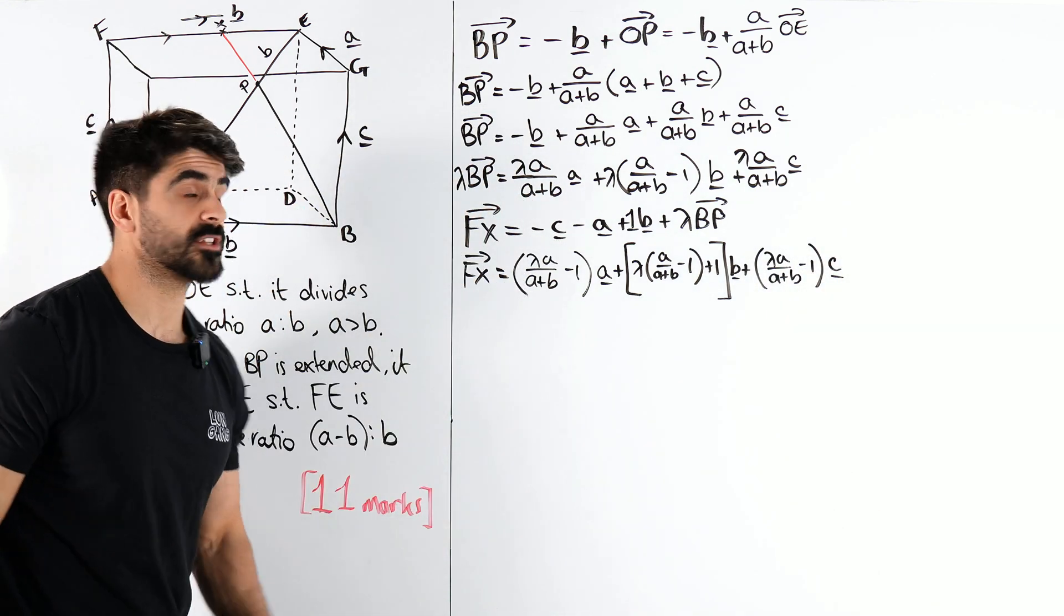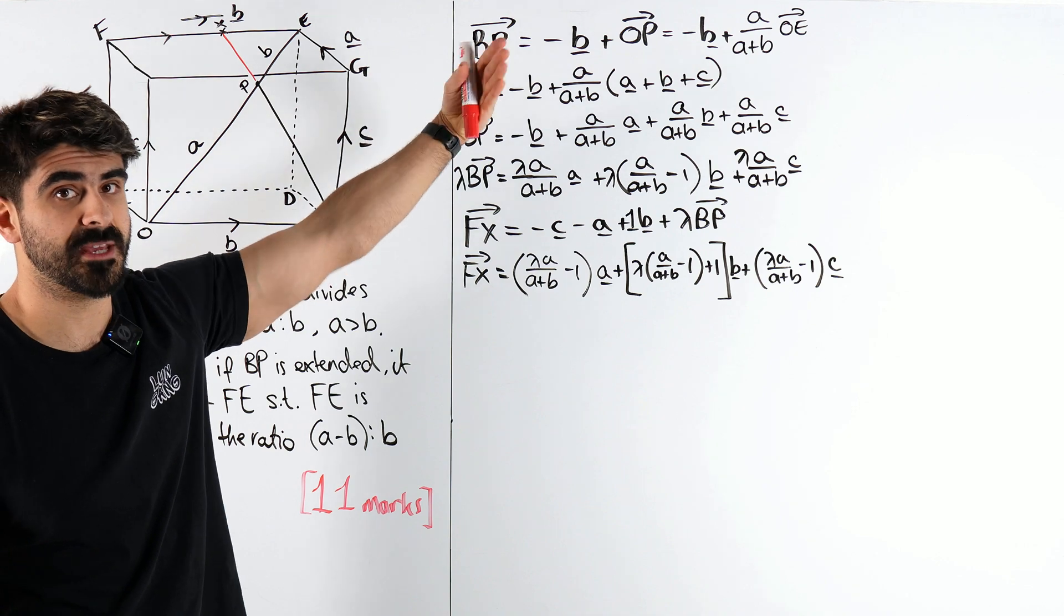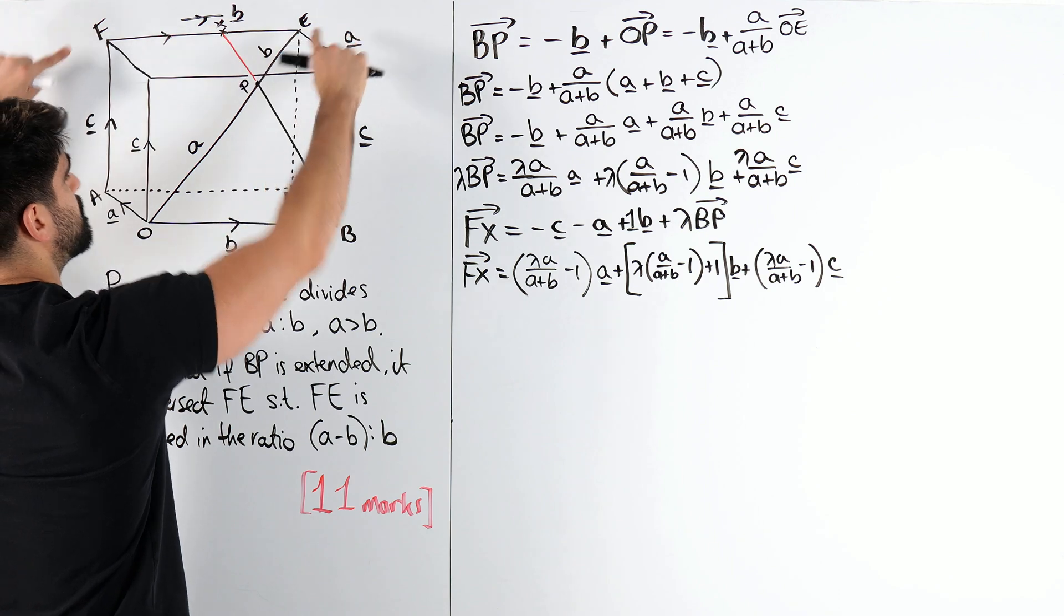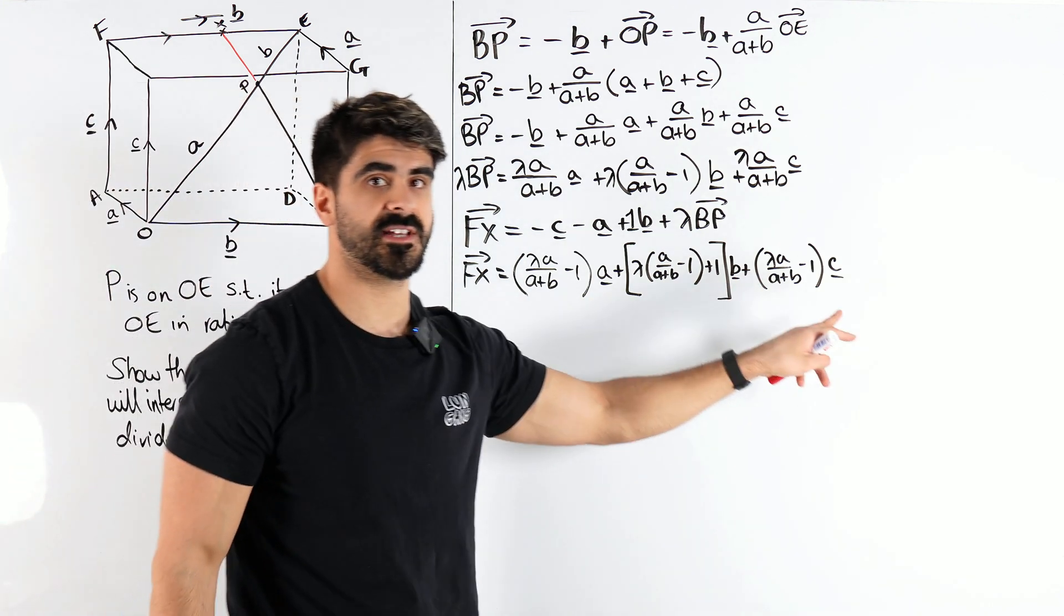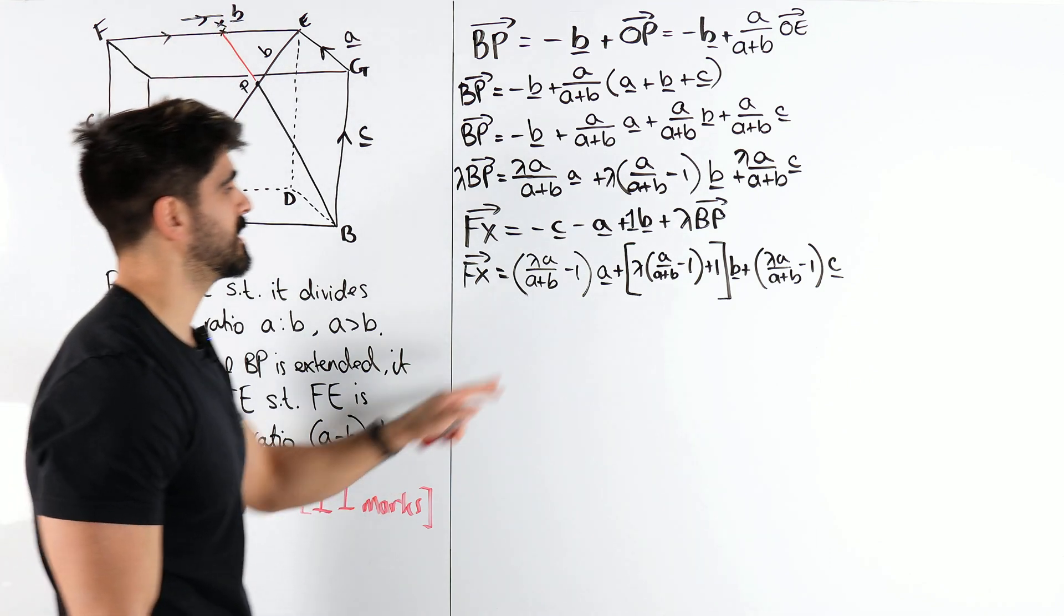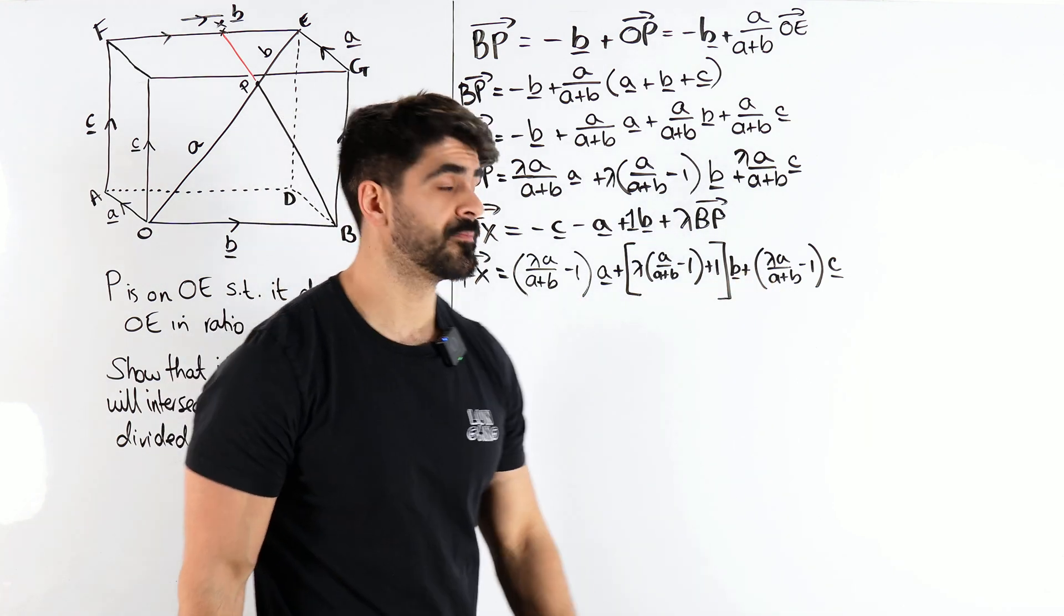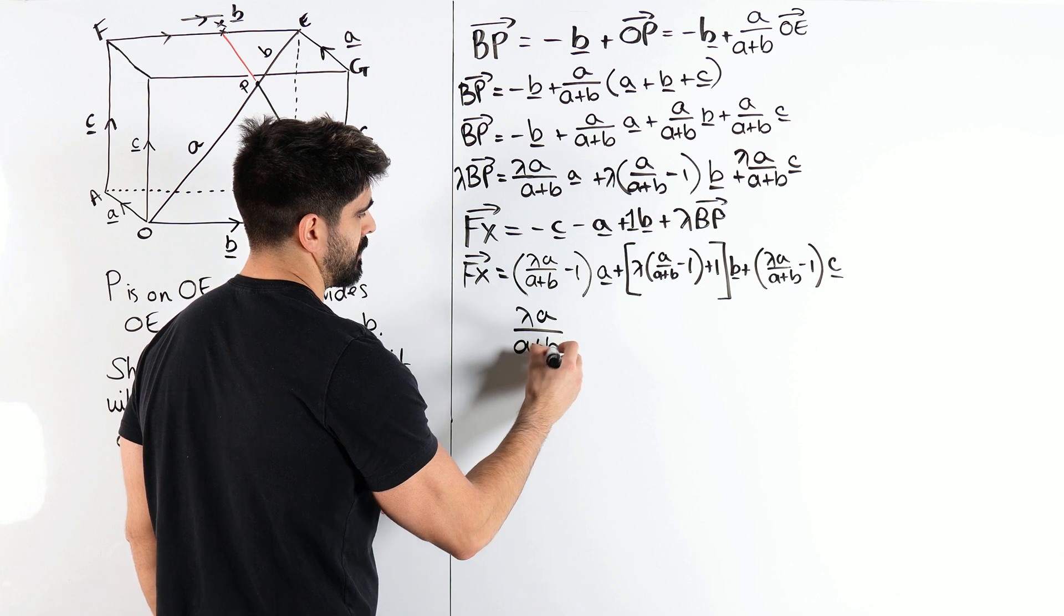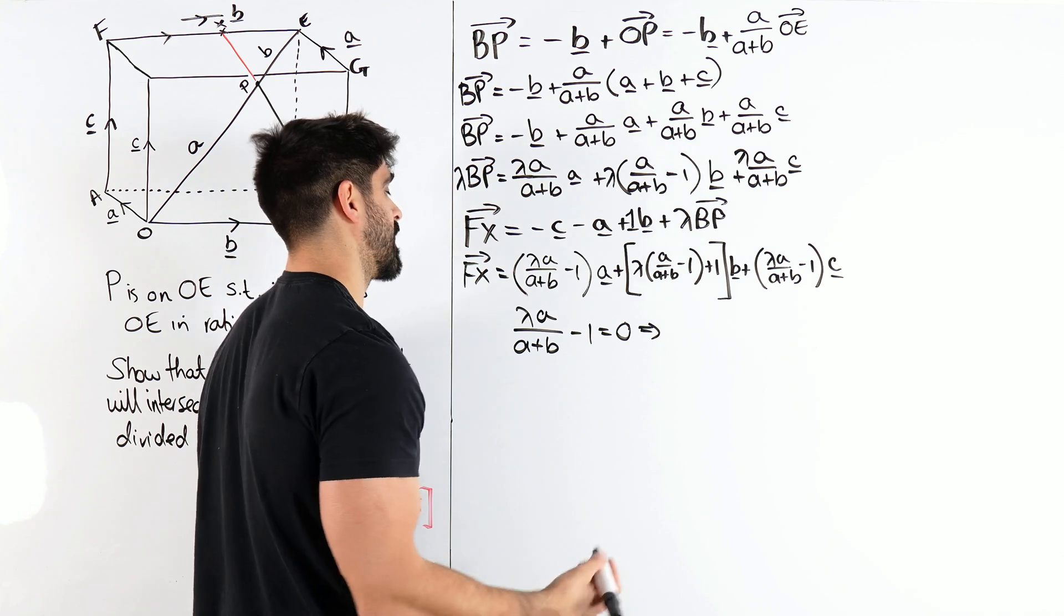Now, what did we say about FX? We said FX is going to be parallel to B. I mean, it's going to be some smaller value than B, right? Because it's FX, B, FX. FX is smaller than B. But what's key here is that my FX has A and C. It's not supposed to have A and C. It should only be a multiple of B, which must mean that these coefficients are 0. And it's handy that both of these coefficients are the same. So, we're going to say lambda A over A plus B minus 1 has to be 0. And from here we can work out what lambda is.